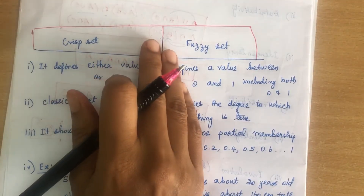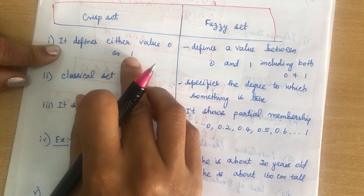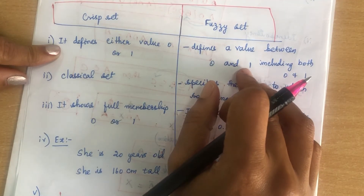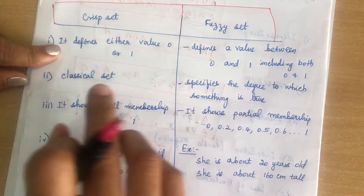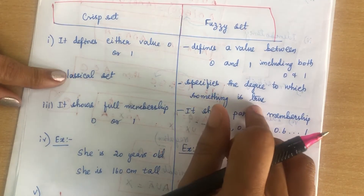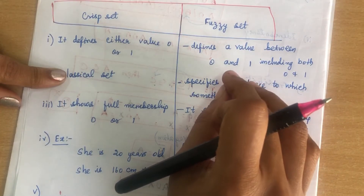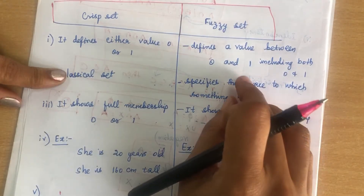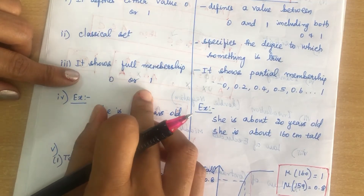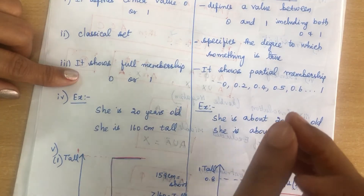Now the difference between crisp set and fuzzy set. A crisp set defines only values 0 or 1. But a fuzzy set has multi values — it takes values between 0 and 1 inclusive, such as 0, 0.1, 0.2, and so on. The fuzzy set specifies the degree to which something is true. It tells you how much an element belongs to a particular set. Crisp set shows full membership — either 0 or 1 — while fuzzy set shows partial membership like 0.2, 0.4, etc.